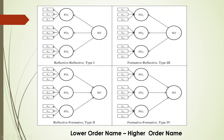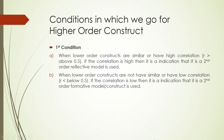The first condition for going for higher-order constructs is when we have very high correlation — if our VIF is overshooting three, or if there is a failure of discriminant validity. When lower-order constructs are similar or have high correlation, it is an indication to go for a second-order reflective model. When lower-order constructs have low correlation, it is an indication to use a second-order formative model.